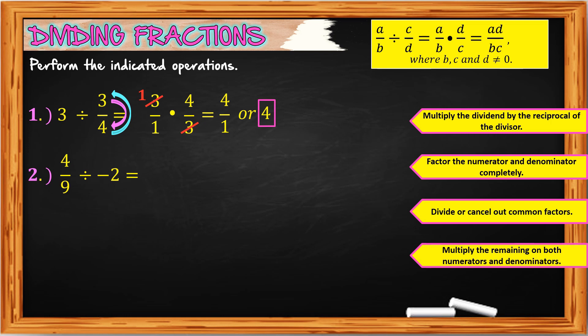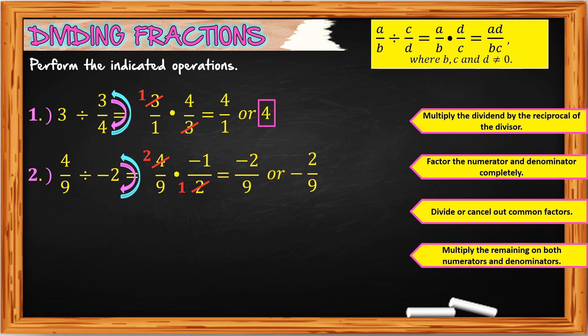For number 2, we have 4 over 9 divided by negative 2. First, we copy the dividend 4 over 9, then change division to multiplication, then get the reciprocal of the divisor — negative 2 equals negative 2 over 1, so the reciprocal is negative 1 over 2. Factor completely: the common factor of 4 and 2 is 2, so 4 divided by 2 is 2, and 2 divided by 2 is 1. Multiply remaining: 2 times negative 1 is negative 2, and 9 times 1 is 9. The result is negative 2 over 9, which is the final answer.